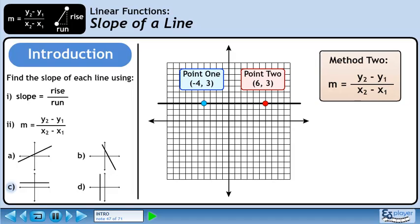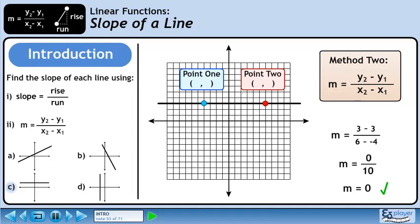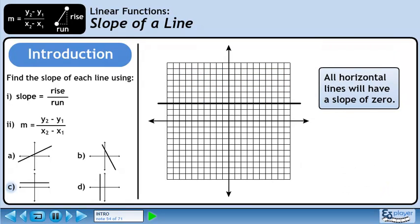Now we'll use the slope formula to calculate the slope of the line. Plugging in the y and x values of both points gives us 0 over 10. The slope of the line is 0, the same value we obtained using method 1. We can generalize that all horizontal lines have a slope of 0, so when you see a horizontal line, you can immediately say the slope is 0 without having to do any calculations.